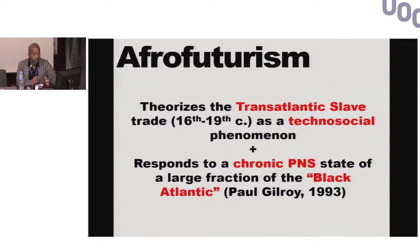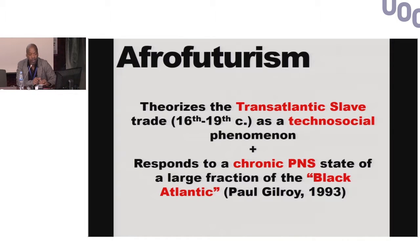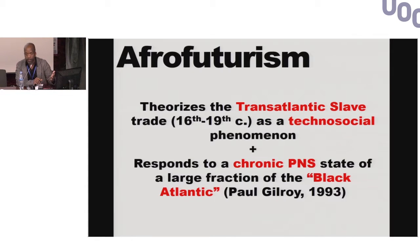Specifically, the transatlantic slave trade for folks that do this kind of work is conceptualized as a techno-social phenomenon — with huge implications — such that slaves in the system in which they were enslaved constituted something like a massive machine, where these people, even though they were not perceived as people then, would have been elements in a giant device. In that way, you can understand Afrofuturism as responding to a chronic PNS state — a chronic one in various parts of the world where black people congregate — effectively a chronic state of PNS for a large fraction of the black transatlantic, to use a phrase that Paul Gilroy traffics in.